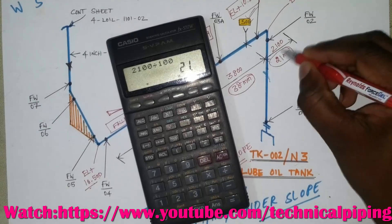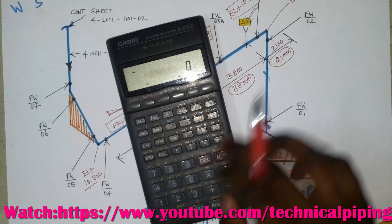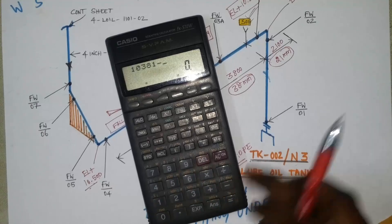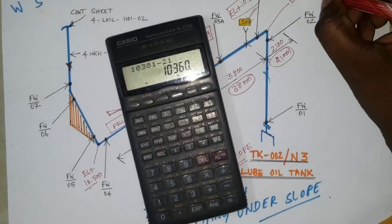So elevation of the elbow, last elevation of the elbow, is 10 meter 360 mm.